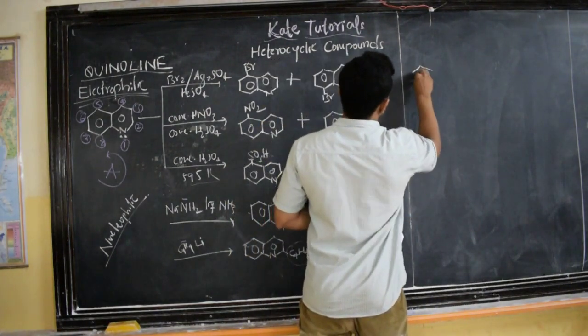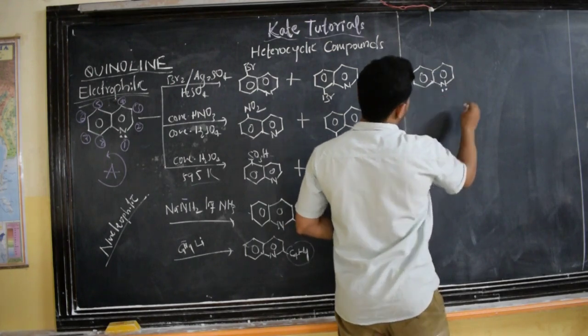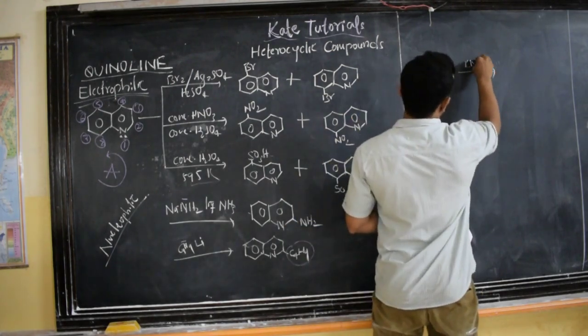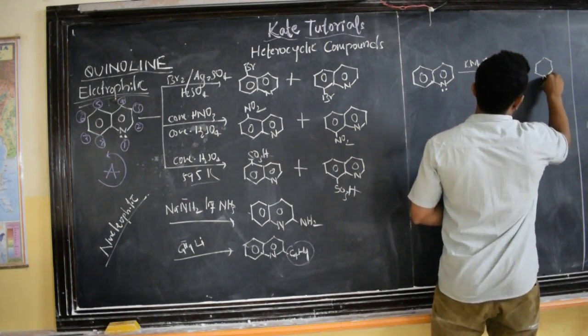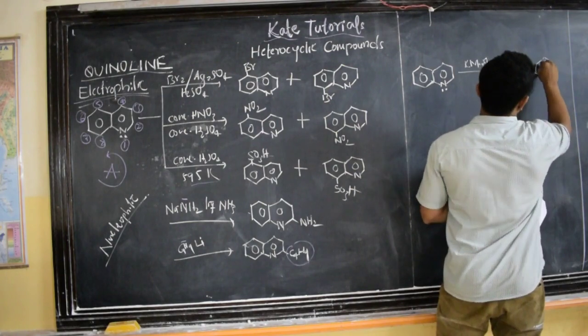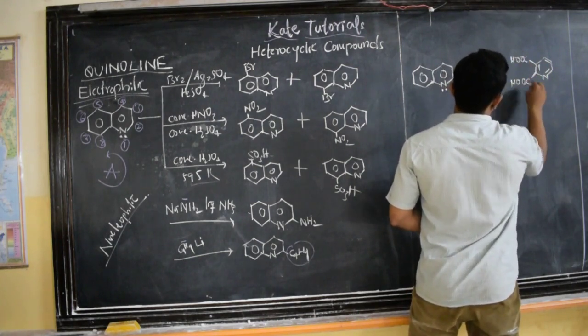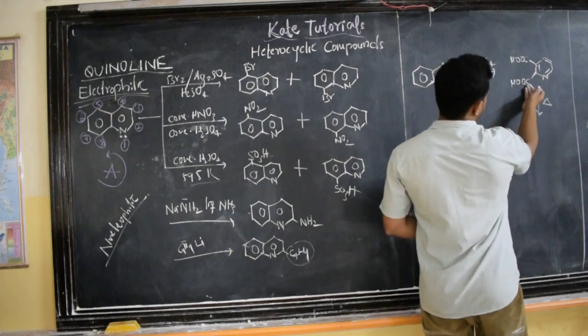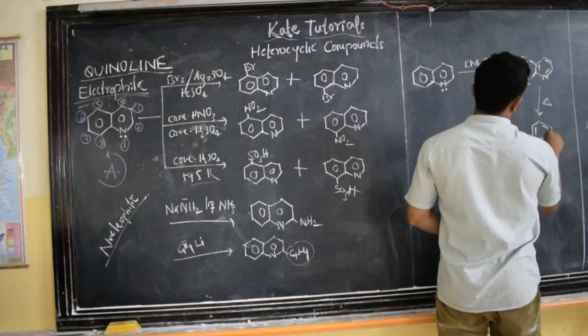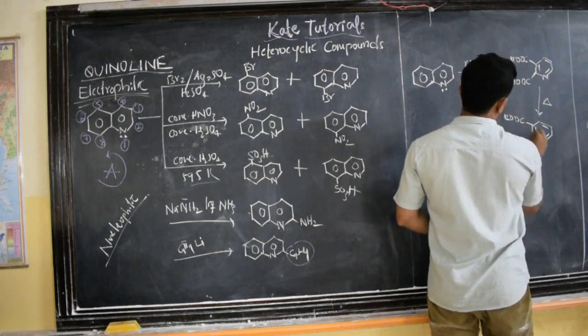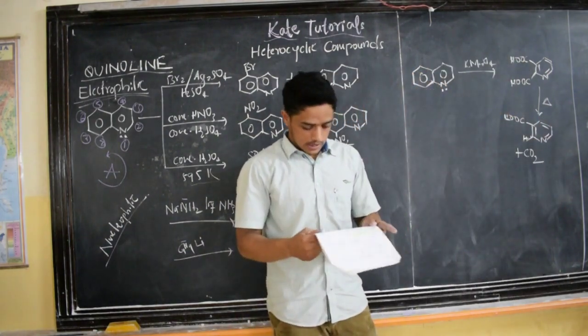This is quinoline—benzene ring and pyridine ring forms quinoline. When we do oxidation using KMnO4, it forms a compound where the pyridine ring remains as it is and this benzene ring oxidizes to two COOH groups. If we heat it again, this COOH group leaves as carbon dioxide. So the pyridine ring remains as it is without disturbing, and this becomes pyridine plus CO2. Hydrogen will remain attached, and that COOH group converts to carbon dioxide.